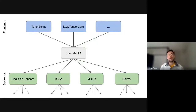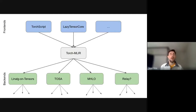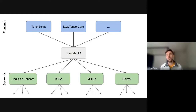Just as a quick diagram: inside of PyTorch, there are actually multiple frontends where your PyTorch program can be converted into an IR. The two main ones are TorchScript and Lazy Tensor Core, and there are likely going to be other ones coming. Both get imported into Torch MLIR into a common IR. Then we can feed that into various backends: Linalg-on-Tensors, TOSA — which is a community-driven spec from ARM for ML operators — MHLO, which is the MLIR-based XLA representation, and maybe someday Relay as a connection point.